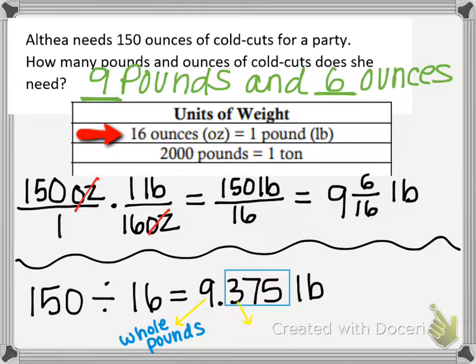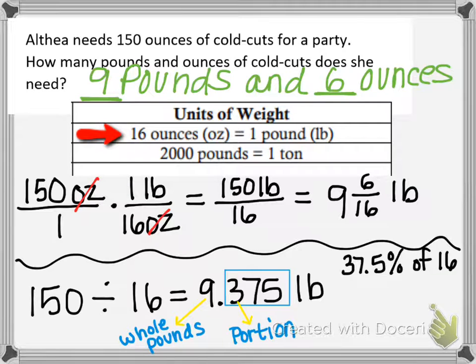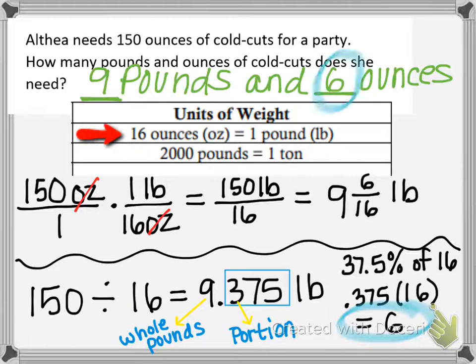But the decimal part, the 0.375, that means I have a portion of another pound. If you turn that into a percentage, it's like saying you have 35% of another pound. Well that's, I'm sorry, that's 37.5% of 16 ounces, because I want to break it down into ounces. So I multiply 0.375 times 16 and I get 6, and that's the 6 ounces.